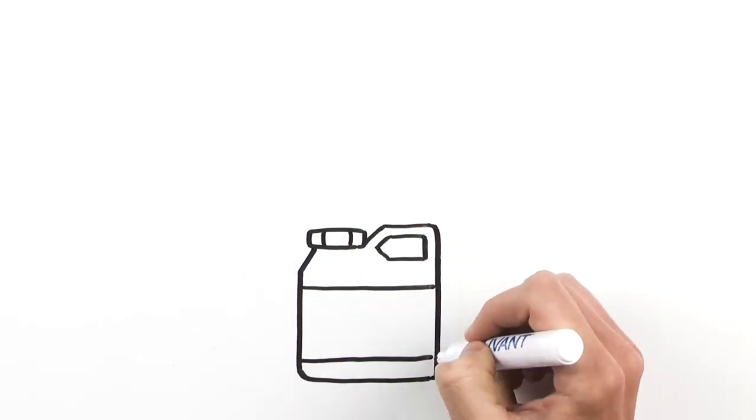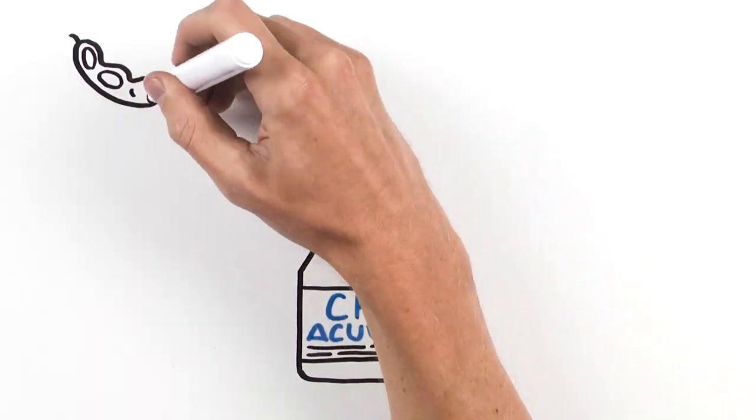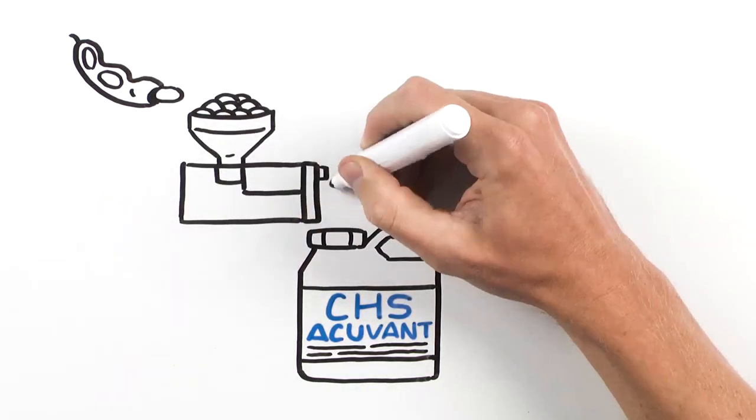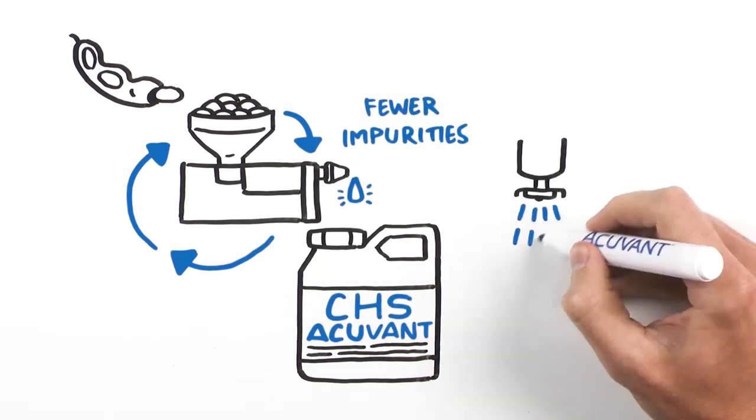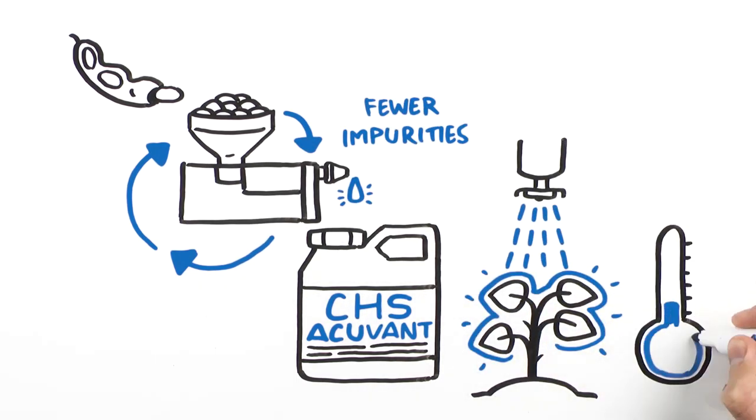Since CHS Acuvant is made with refined CHS soybean oil rather than crude soybean oil, it contains fewer impurities to deliver superior mixability and cold weather stability.